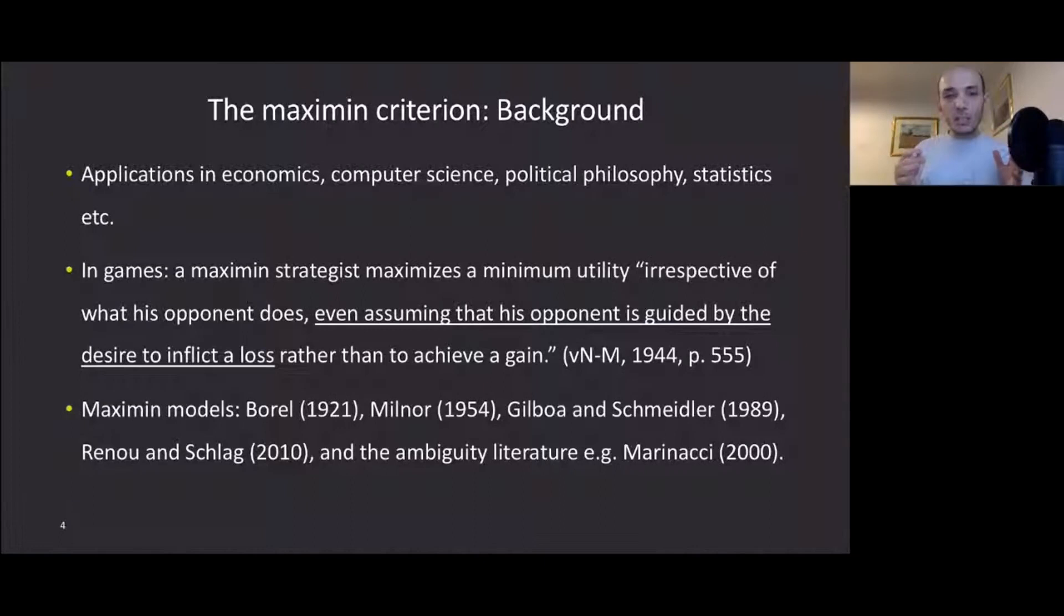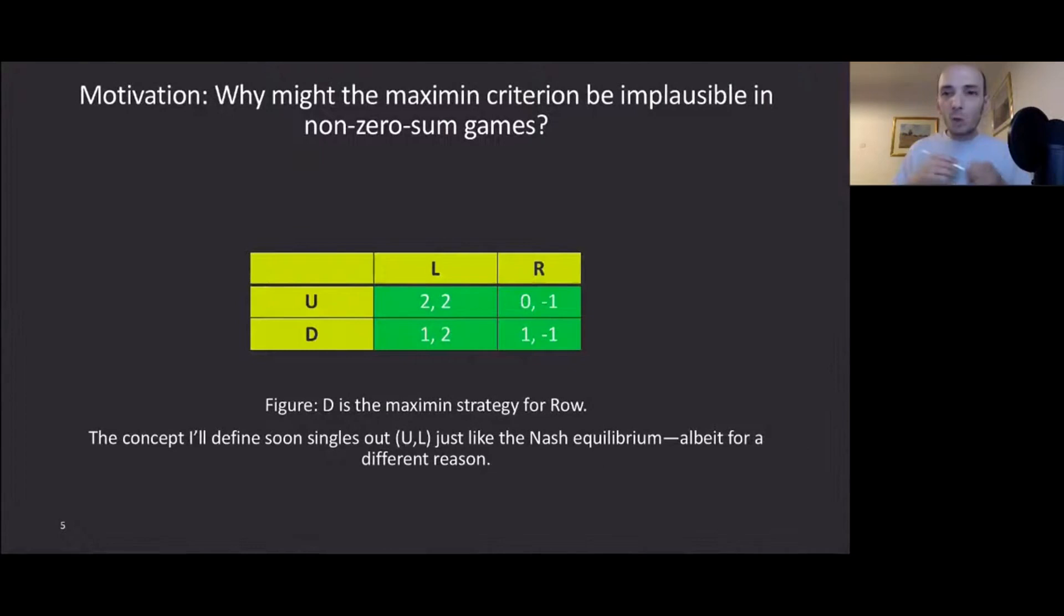As a definition, a Maximin strategist maximizes a minimum utility irrespective of what his or her opponent does, even assuming that the opponent is guided by the desire to inflict a loss rather than to achieve a gain. So basically, even if you have to shoot yourself in the leg to hurt your opponent a little bit, you have to do it according to the Maximin criteria. Early Maximin models include Borel, Milner's characterization, and the seminal work of Gilboa and Schmeidler on Maximin expected utility.